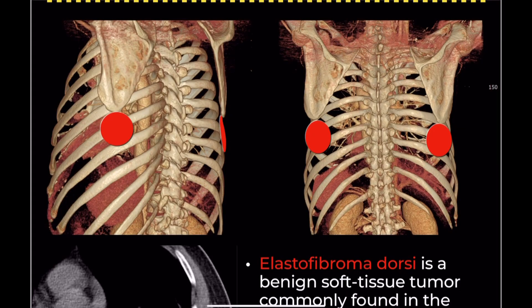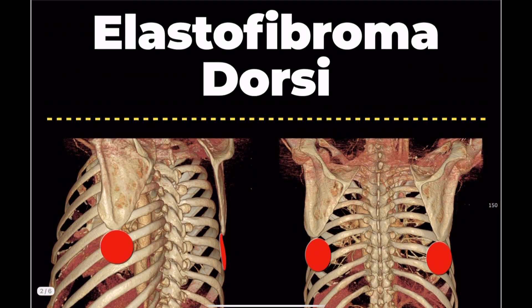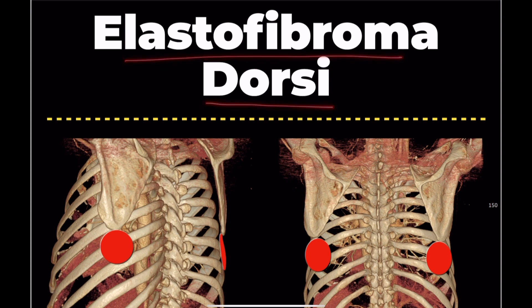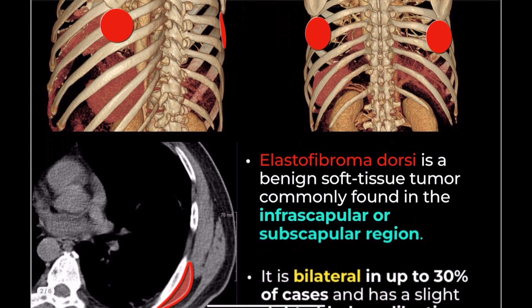If a patient presents with bilateral pain in the infrascapular region, especially with movement, or experiences clicking, snapping, or clunking sensations around the scapula, elastofibroma dorsi should be on your differential.